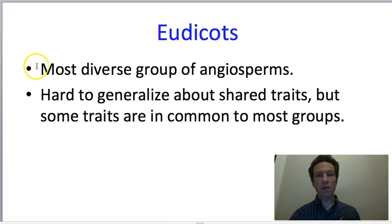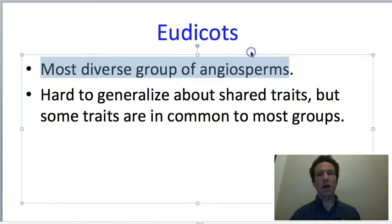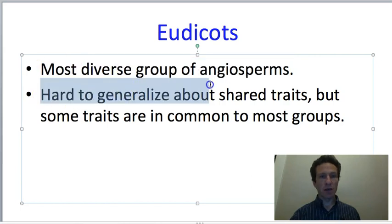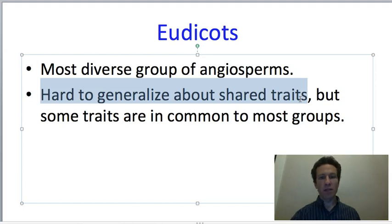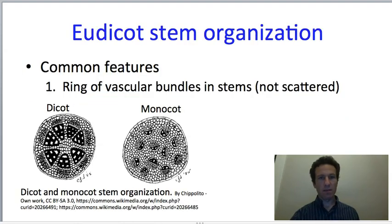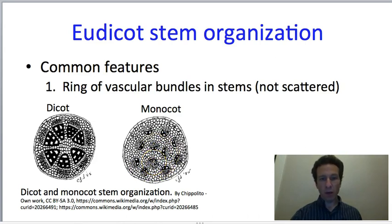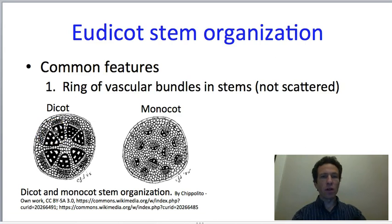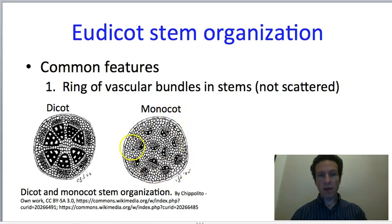The eudicots are the most diverse group of angiosperms, which makes it hard to generalize, but there are some traits that most of them share. First, remember that monocots have scattered vascular bundles in their stems, not forming one concentric circle. Dicots tend to have one concentric circle of vascular bundles, which allows them to form true wood—something monocots cannot typically do.